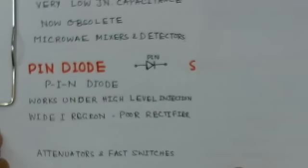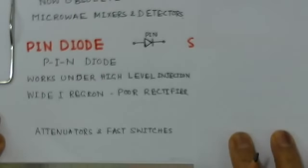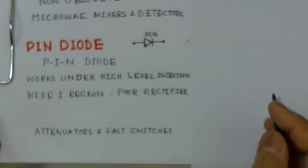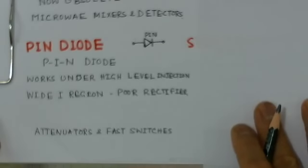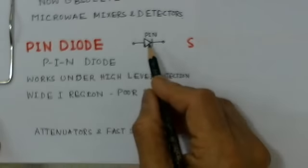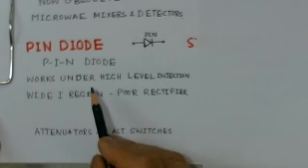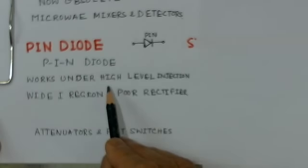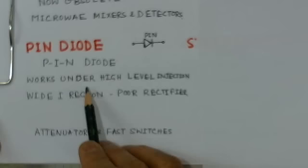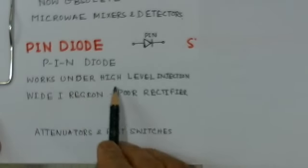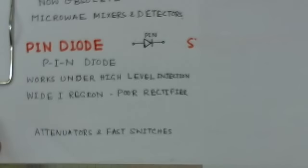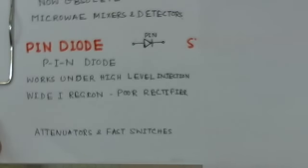The PIN diode uses the symbol of a normal diode. It has an intrinsic semiconductor region — the I region — between the P and N regions. The PIN diode works under a high level of injection, and since it has a wide I region, it is a poor rectifier. It finds application in attenuators and fast switches.